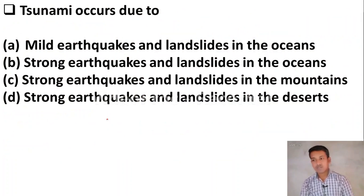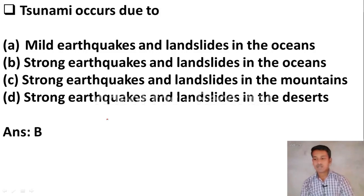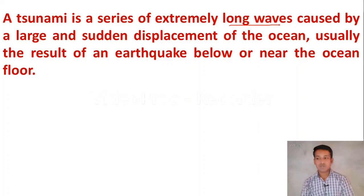The next question: tsunami occurs due to. Option A, mild earthquakes and landslides in the oceans. Option B, strong earthquakes and landslides in the oceans. Option C, strong earthquakes and landslides in the mountains. Option D, strong earthquakes and landslides in the desert. The right answer is Option B. Tsunami is a series of extremely long waves caused by a large and sudden displacement of the ocean, usually the result of an earthquake below or near the ocean floor.